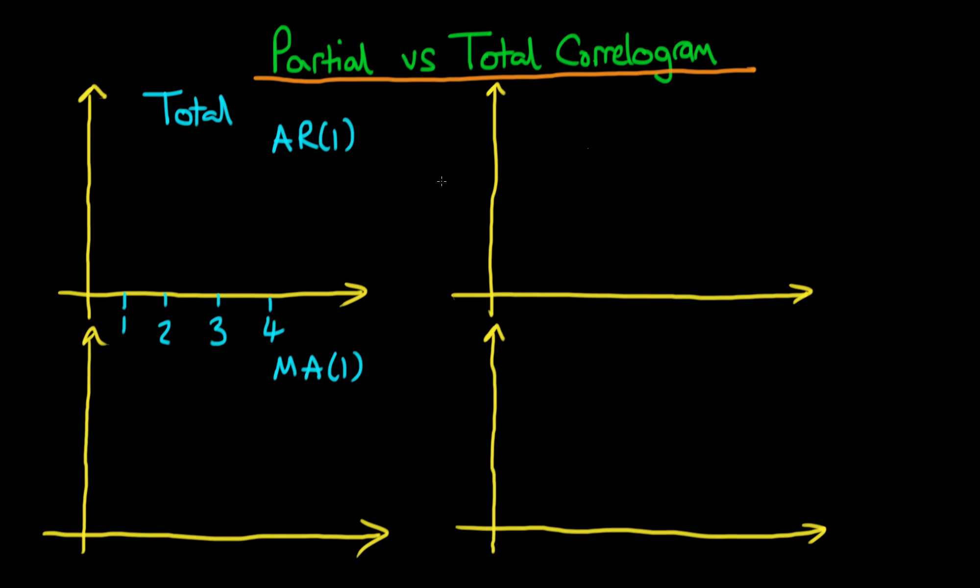For an AR1 process we know that there is going to be some correlation between the series and itself lagged and this is just going to decay away. If I go two lags back this is going to decline a bit further. Three lags it's going to get even smaller and it's going to exponentially decrease like that. So that's what an AR1 total correlogram will look like.